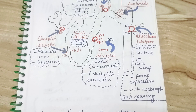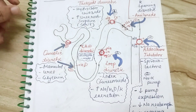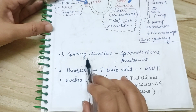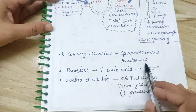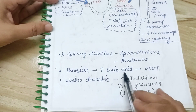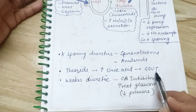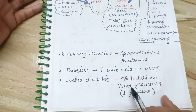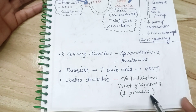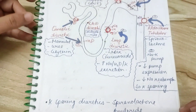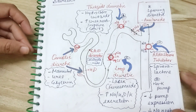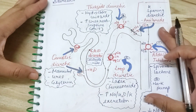To summarize: potassium-sparing diuretics include spironolactone and amiloride. Thiazide diuretics increase uric acid formation and can precipitate gout. Weak diuretics are carbonic anhydrase inhibitors, and they are also helpful in treating glaucoma by decreasing intraocular pressure.